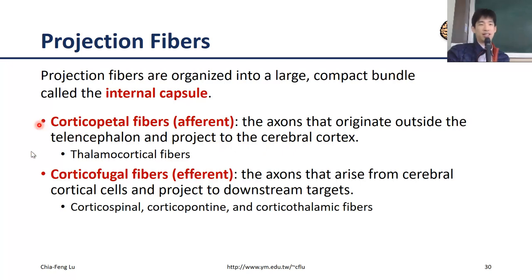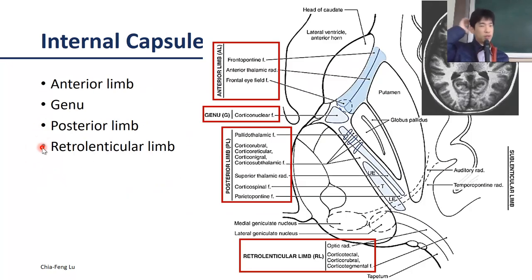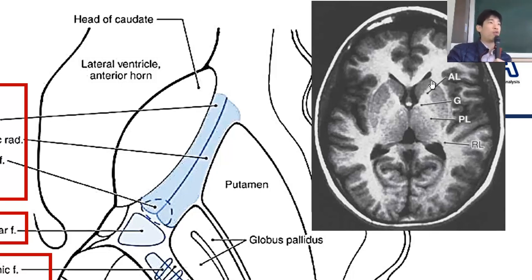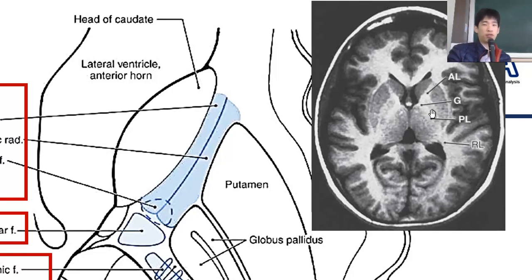On T1-weighted imaging, you can see the internal capsule, which can be subdivided into the anterior limb, the genu region, and the posterior limb. The anterior limb is critical for interconnection between the thalamus and the frontal lobe. The posterior limb is critical for motor control, as most projection fibers pass through the posterior limb of the internal capsule.